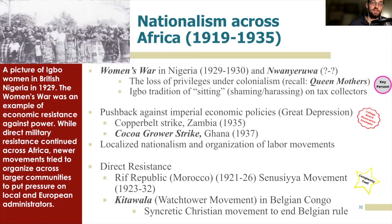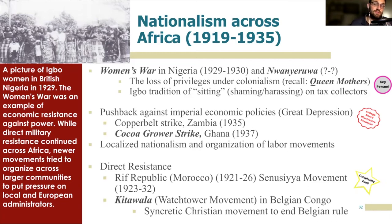Nwanyeruwa had been accosted by a tax collector in the employ of the British Imperial administration, who demanded to know how much property she had so he could tax it. She argued that in traditional Igbo society, widows were exempt from taxation, but she was physically assaulted by the tax collector. She rallied women in her area, and they undertook the Igbo tradition of sitting on tax collectors — that is, shaming, harassing, and sometimes destroying the property of tax collectors until they resign or make right their transgression. One concession the British gave to protesters of the Women's War was to allow women to be part of the tax-collecting agency. This act of resistance is widely considered a turning point in African nationalism, specifically in Nigeria.